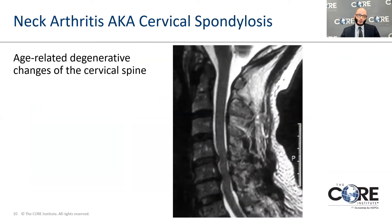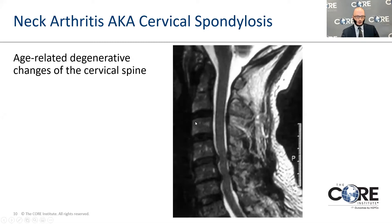Getting into the meat of the talk — we're focusing on neck arthritis, cervical spondylosis, which refers to age-related degenerative changes of the cervical spine. The image you're looking at is an MRI. In the center, the long dark stripe is the spinal cord, the white surrounding it is cerebrospinal fluid, the lighter boxes on the left are the vertebral bodies or bone in the front, and the dark spaces between them are the discs — the shock absorbers between the blocks of bone.